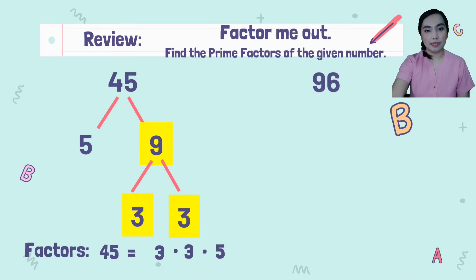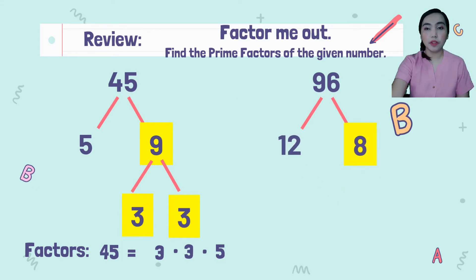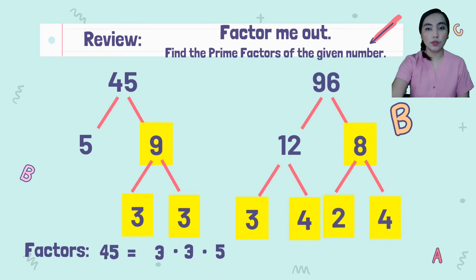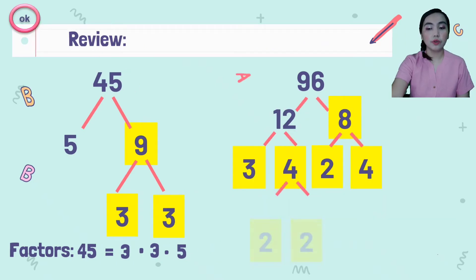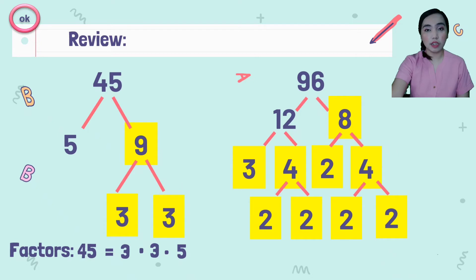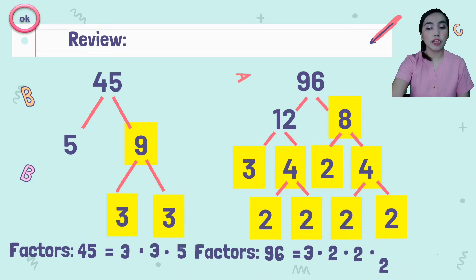How about 96? 96 has factors of 12 and 8. But 12 and 8 are not yet prime factors. So we got 3 and 4 for 12, and for 8, 2 and 4. 4 is not yet a prime factor, so we got 2 and 2 for each 4. So the prime factors of 96 are 3 times 2 times 2 times 2 times 2 times 2.